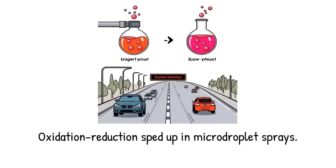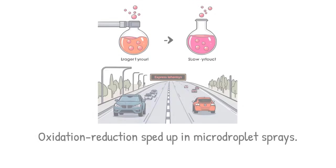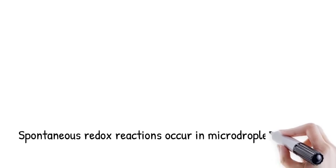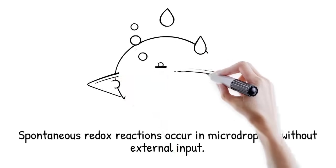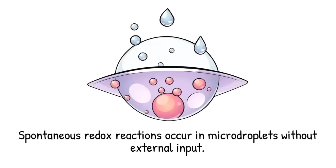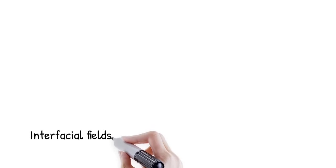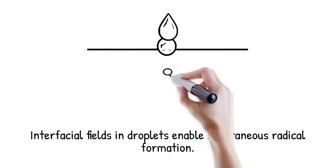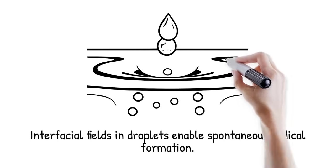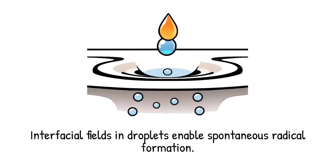Micro-droplets often show surprising redox chemistry, where electron transfer steps proceed without external input. Reports describe the spontaneous formation of reactive species such as hydrogen peroxide, hydroxyl radicals, or solvated electrons at droplet surfaces. These processes appear to be driven by strong interfacial electric fields and uneven charge distributions. Even neutral droplets exhibit gradients that enable such spontaneous events. The surface becomes a factory for radicals and oxidants that are rare in bulk solution.